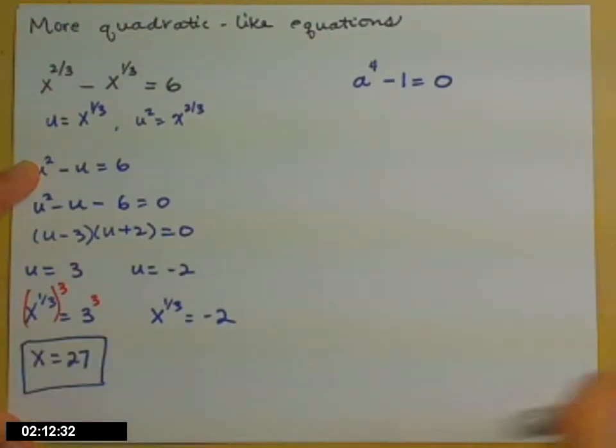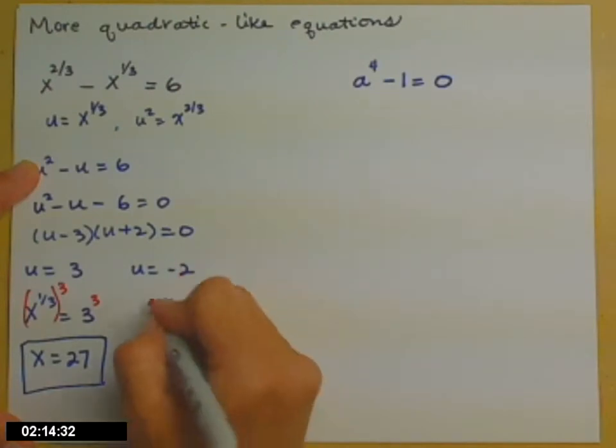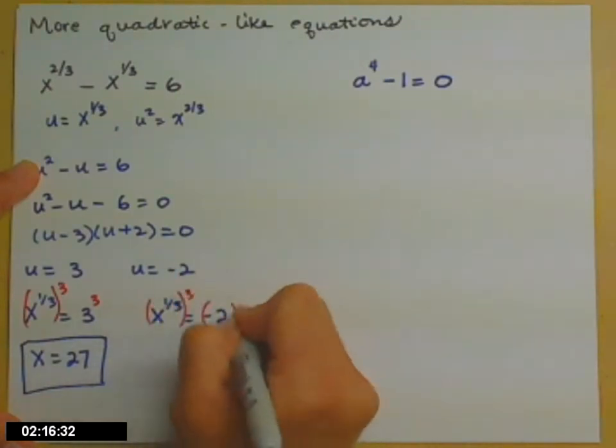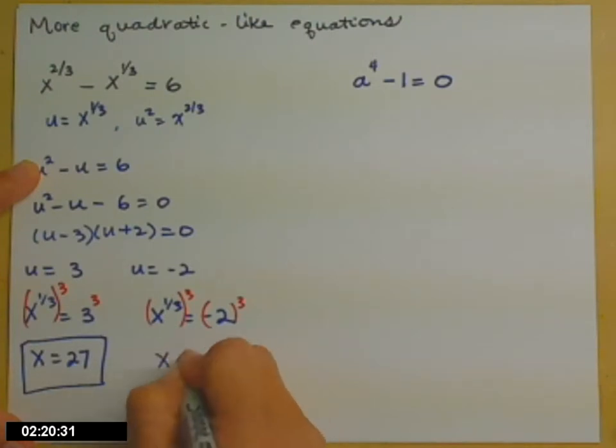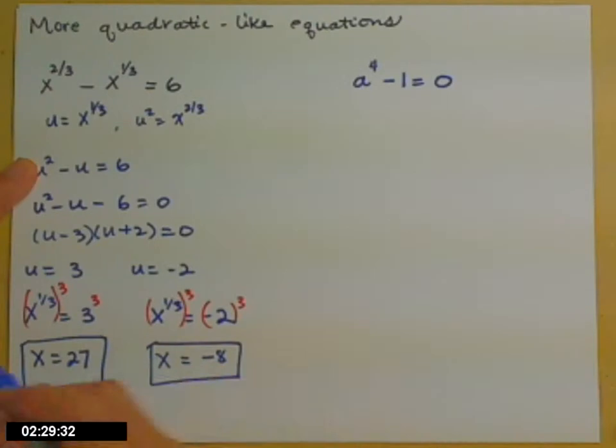And then on the second answer that we have, again, we're going to cube both sides to get rid of that one-third power. That gets us just a plain old x or an x to the one if you'd prefer. And then negative two times negative two times negative two is negative eight.